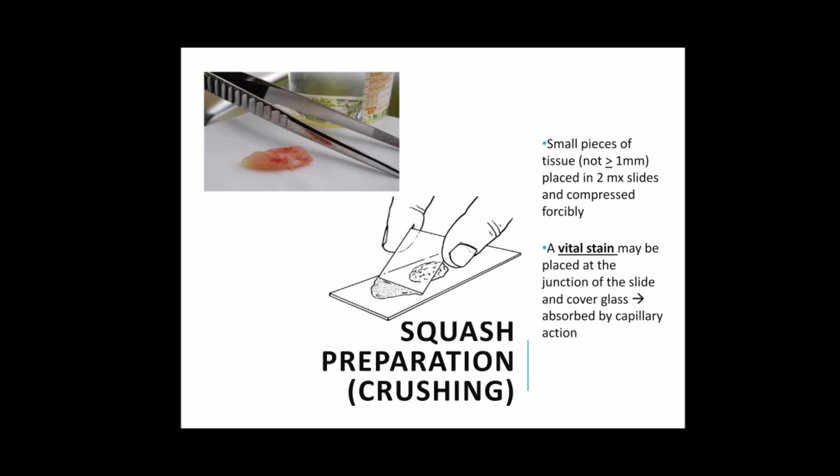Another technique is through squash preparation, otherwise known as crushing. This is a process whereby small pieces of tissue, not more than one millimeter in diameter, are placed on a microscopic slide and forcibly compressed or crushed with another slide or with a cover glass. If necessary, a vital stain may be placed at the junction of the slide and the cover glass and allowed to be absorbed by the tissue through capillary action. A vital stain is used to demonstrate organelles from the cells.